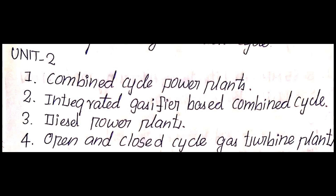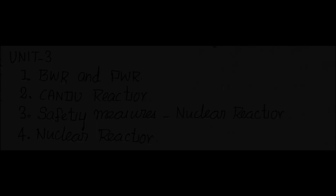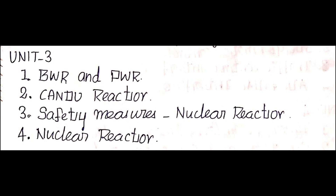The fourth question — most important, possibly a 2-mark question — is the open and closed cycle gas turbine power plant: the differences between them. If you want to see the parameters, you will need to cover those in the second and third topics. There are also four questions about BWR and PWR.